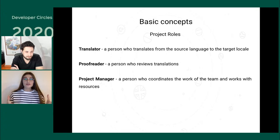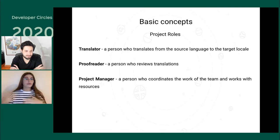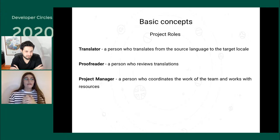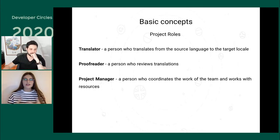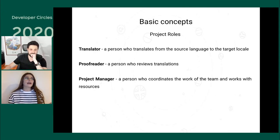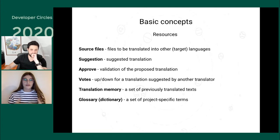First, we have translators — people who translate from the source language to the target locales. Then we have a proofreader, somebody who takes care of existing translations. Translator and proofreader make a perfect combination — they usually work together. Then we have a project manager, a person who handles team members, delivers tasks on time, and manages resources like source files, translation memory, and glossary.